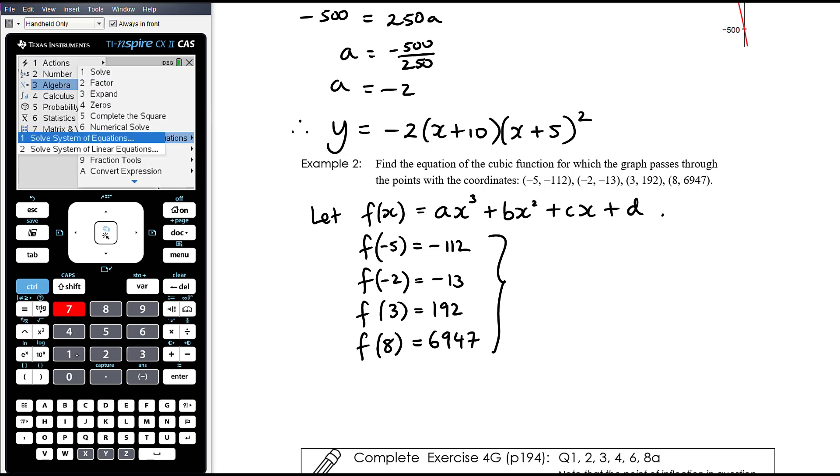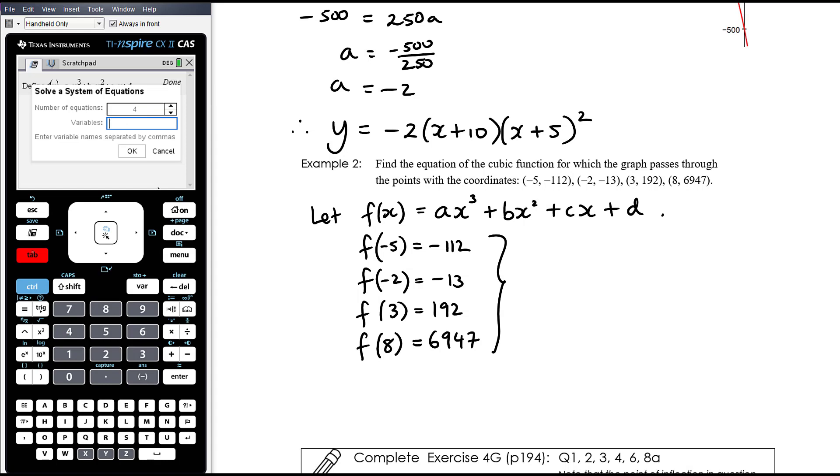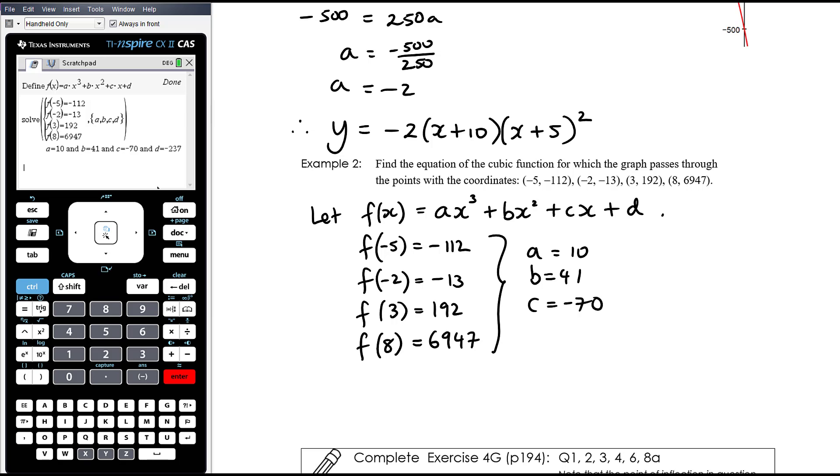OK, and then we're going to solve a system of equations. It's going to be four equations and the unknowns will be a, b, c and d. The first equation f of negative 5 equals negative 112. The second equation f of negative 2 equals negative 13. The third equation f of 3 equals 192. And the fourth equation f of 8 equals 6947. And from that we get that a equals 10, b equals 41, c equals negative 70, and d equals negative 237.